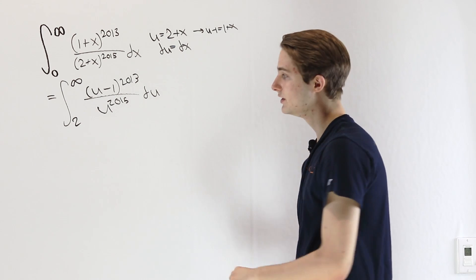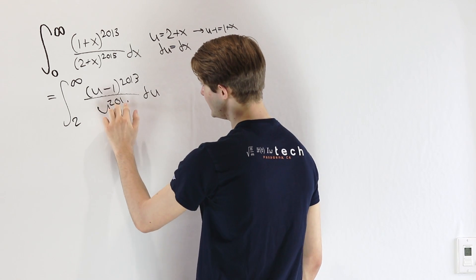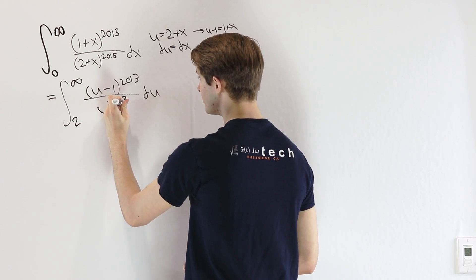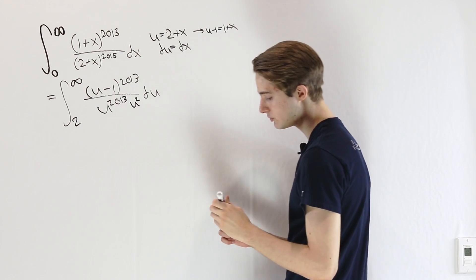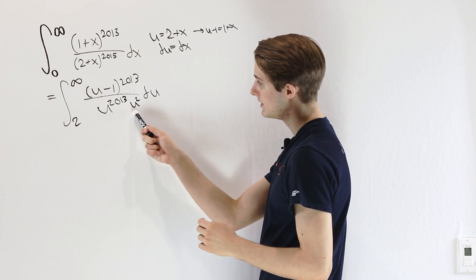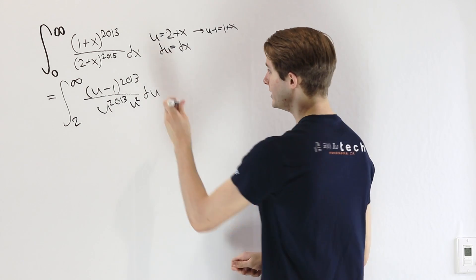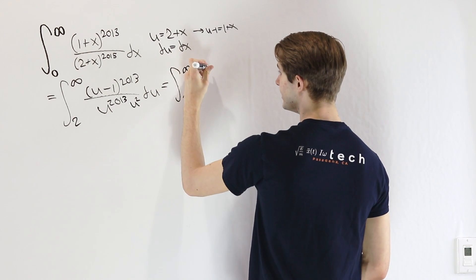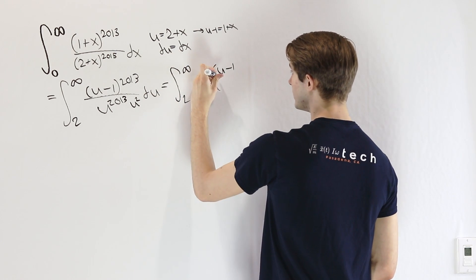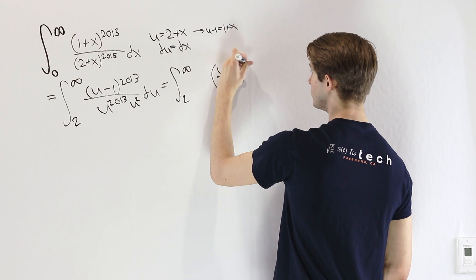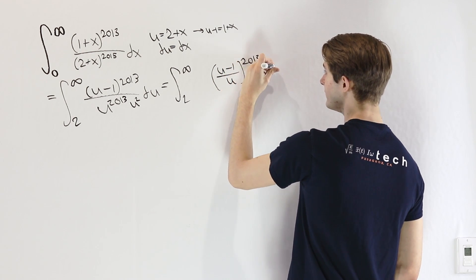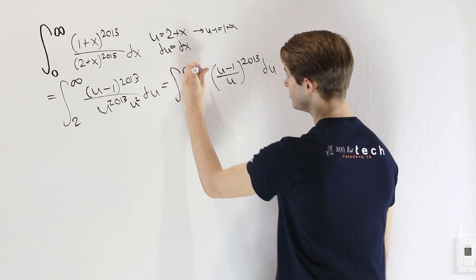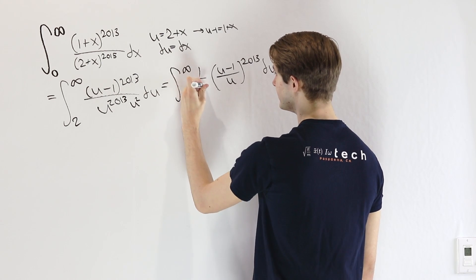So what we can do is write u^2015 as u^2013 times u^2. So when we multiply them, we'll get the same result. But now we can rewrite this as the integral from 2 to infinity of (u-1) over u^2013. And then we can take this u^2 and bring it out to the front.